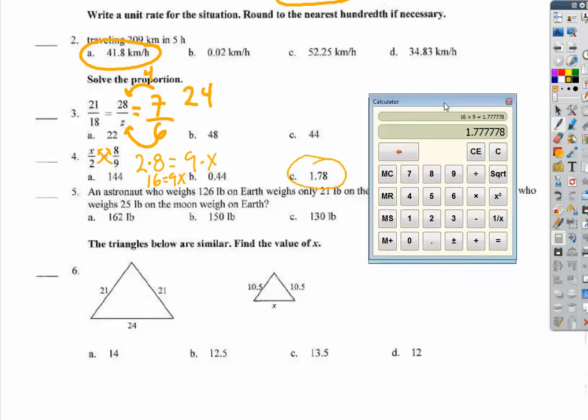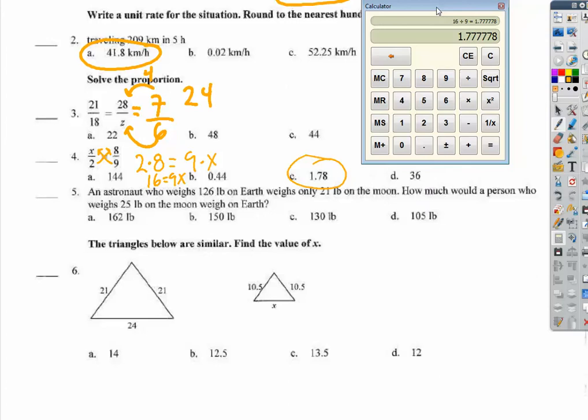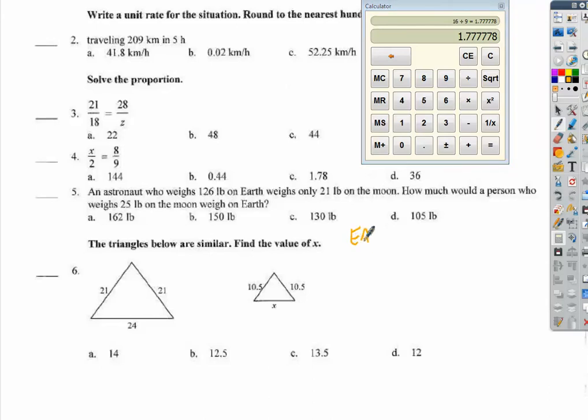An astronaut who weighs 126 pounds on Earth weighs only 21 pounds on the moon. How much would a person who weighs 25 pounds on the moon weigh on Earth? I'm going to make a ratio of Earth weight to moon weight. Everything with the Earth will be in the numerator. Everything on the moon will be in the denominator. So, we have 126. That's an earth weight. It's 21 on the moon. And I don't know what this one is. And I know that on Earth, or on the moon, they weigh 25.